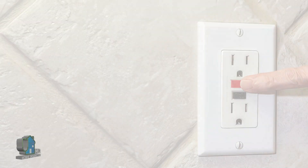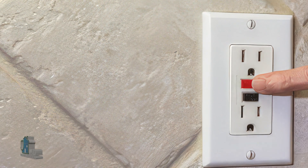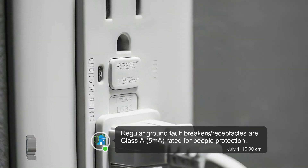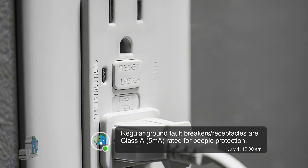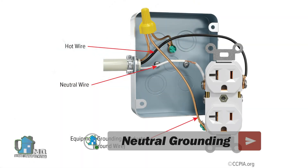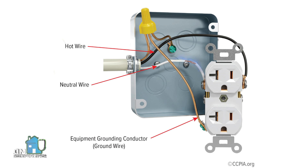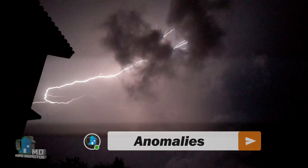An AFCI can also trip from a ground fault — but this is not the same as a GFCI receptacle. A standard GFCI trips at around 5 to 6 milliamps, sufficient for people protection, while an AFCI will detect a ground fault of 30 milliamps or greater. It will also trip on an unintended neutral grounding, such as when the neutral conductor of a circuit touches a grounded metal like a grounded outlet box.